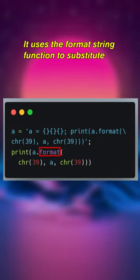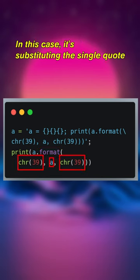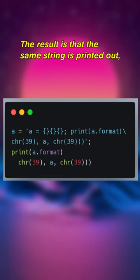That's where the magic comes in. It uses the format string function to substitute the values of the variables into the string. In this case, it's substituting the single quote characters and the variable 'a' into the string.